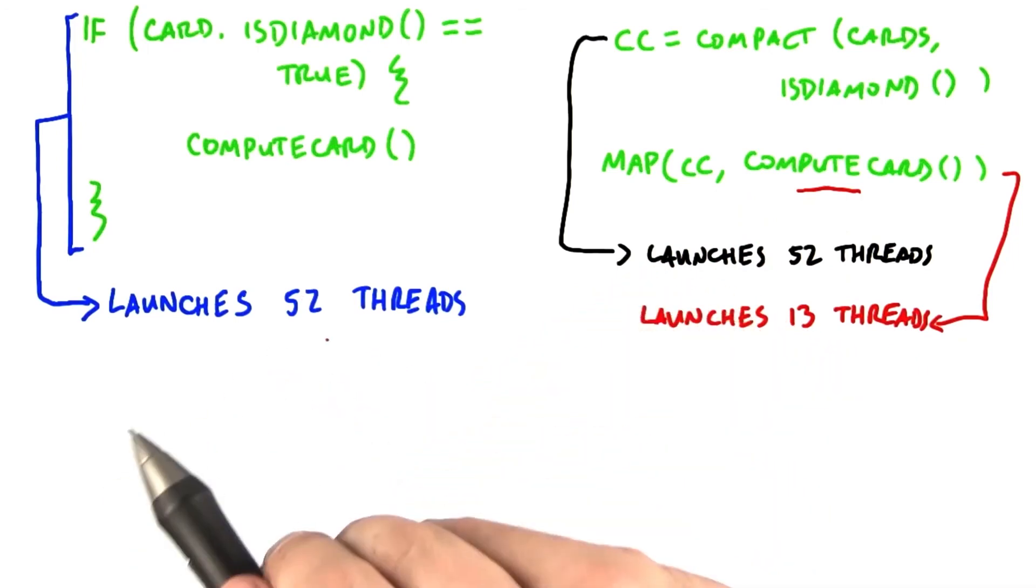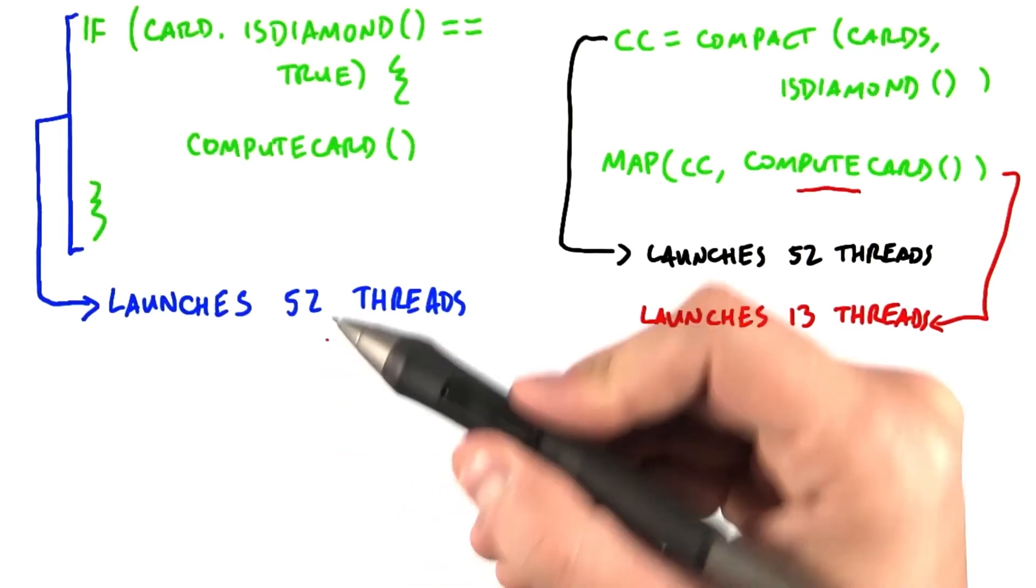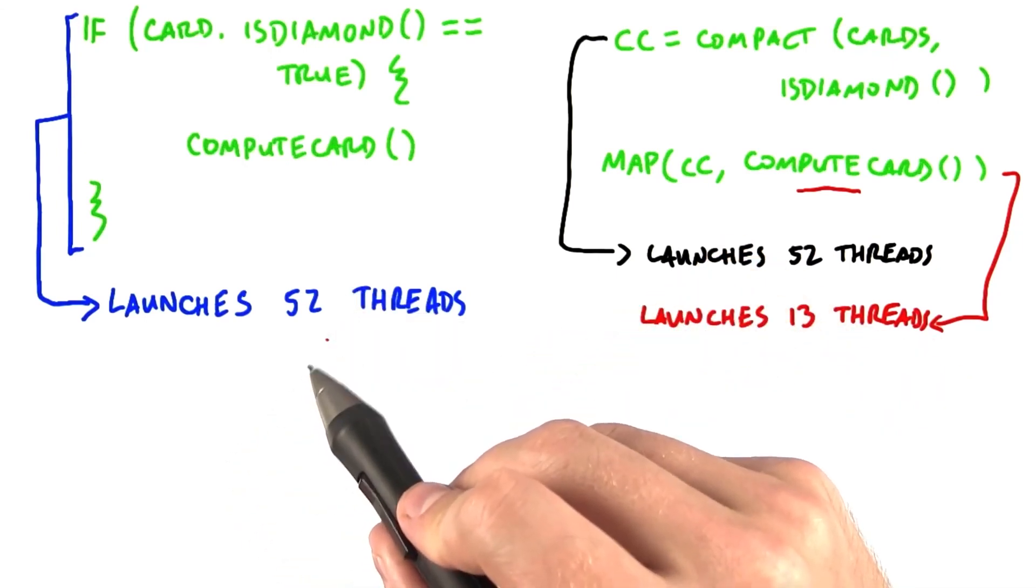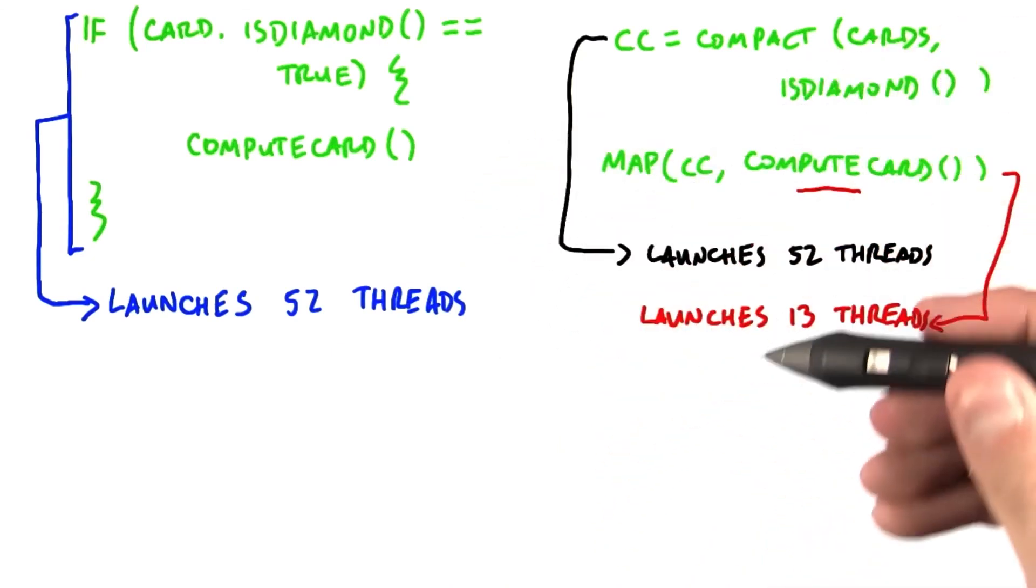But because both idle and non-idle threads are running in lockstep, we're still paying the runtime cost of having four times as many threads. Therefore, generally, you prefer the dense approach, especially when this computation is expensive.